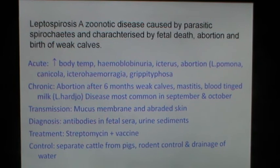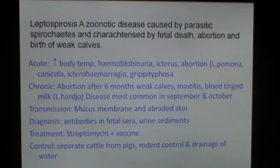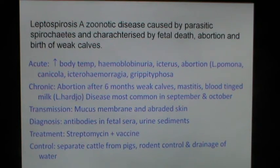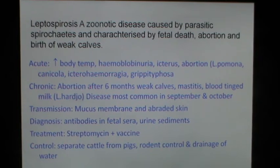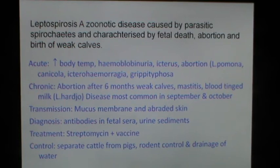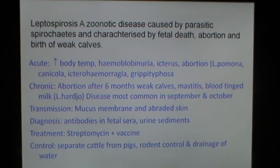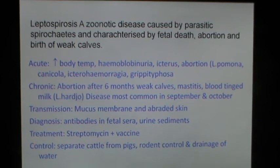Leptospirosis is a zoonotic disease caused by parasitic spirochetes and characterized by fetal death, abortion and birth of weak calves. In the acute form, there is increased body temperature, hemoglobinuria and abortion. In the chronic form, there is abortion after six months, birth of weak calves, development of mastitis and blood-tinged milk in all four quarters. The disease is most common in September and October in some countries. Transmission is through mucous membrane and abraded skin. Diagnosis includes detection of antibodies in fetal sera and urine sediments. Treatment includes streptomycin and a vaccine is available for leptospira.